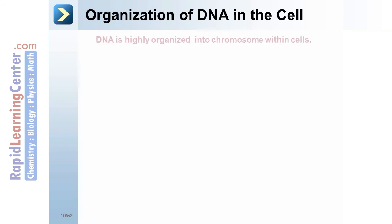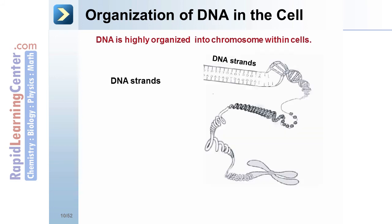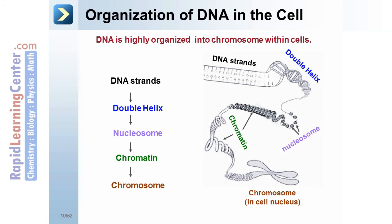Organization of DNA in the cell. DNA is highly organized into chromosomes within the cell. Notice the DNA strands. They wind. It's a double helix. It forms nucleosomes. The nucleosomes further form into chromatin. These form chromosomes. Chromosomes are located in the cell's nucleus and associated with proteins.